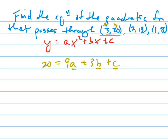Let's do the same thing with this next point. I'll do pink for my pink-haired friends out there. We've got 13 equals — because that's y — 2 squared is 4, so 4a plus 2b plus c.